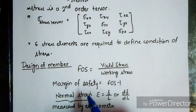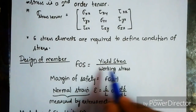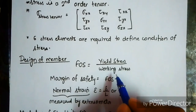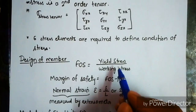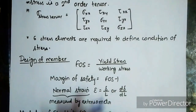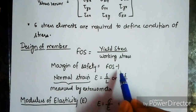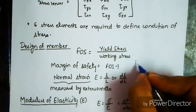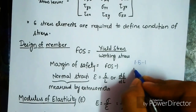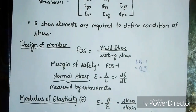For design of members, we always apply the factor of safety. Factor of safety equals yield stress upon working stress, where working stress is the actual stress and yield stress is the stress at which deformation occurs. The margin of safety is factor of safety minus one. For example, if the factor of safety is 1.5, the margin of safety is 0.5.